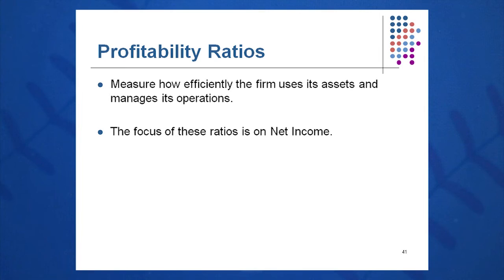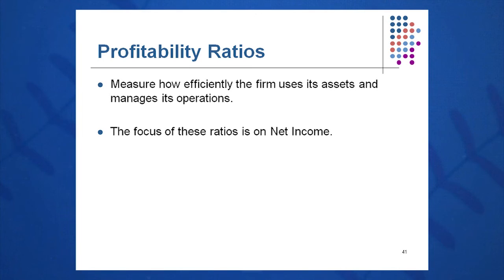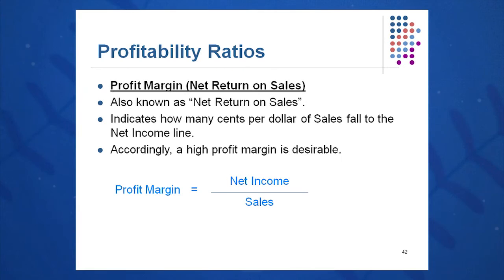Category number four is profitability ratios. There are three of these, and the focus is on net income or profitability — how efficiently are we using our assets to manage operations and generate profit? The first is profit margin, or net return on sales: net income divided by sales — both from the income statement. How many cents of net income are left for every dollar of sales? It measures how well we turn sales into net income.